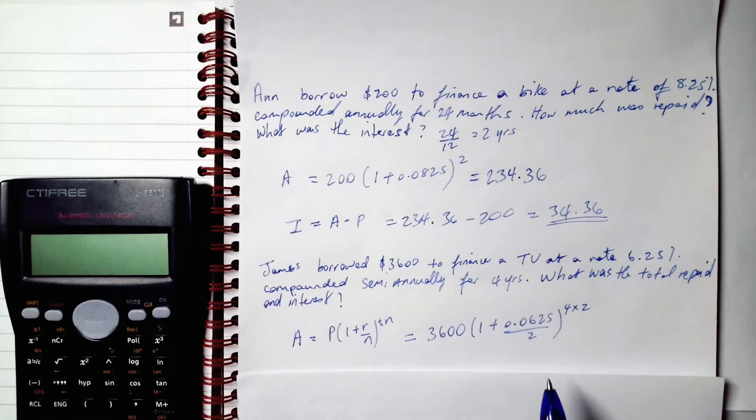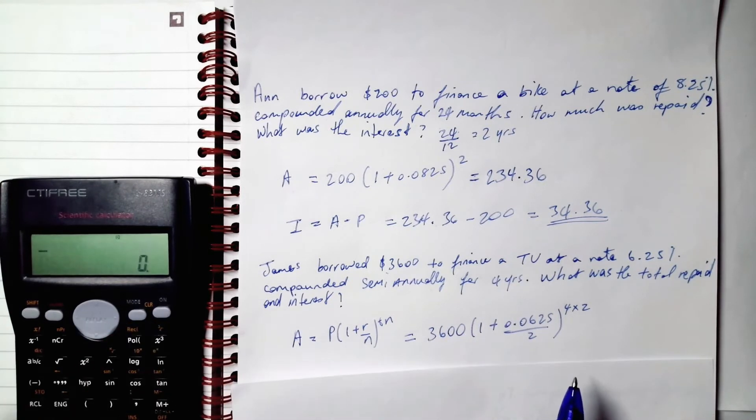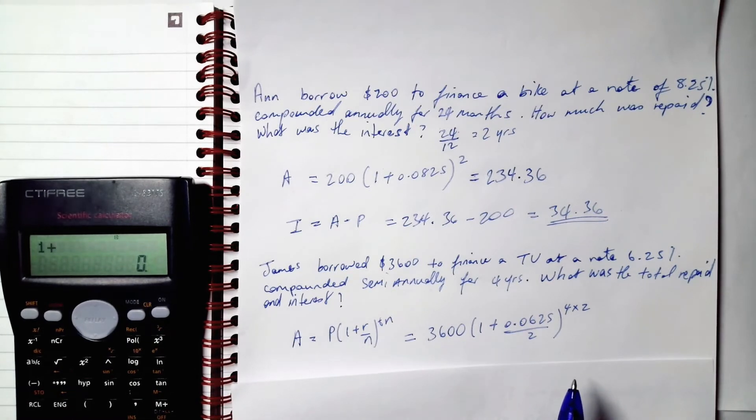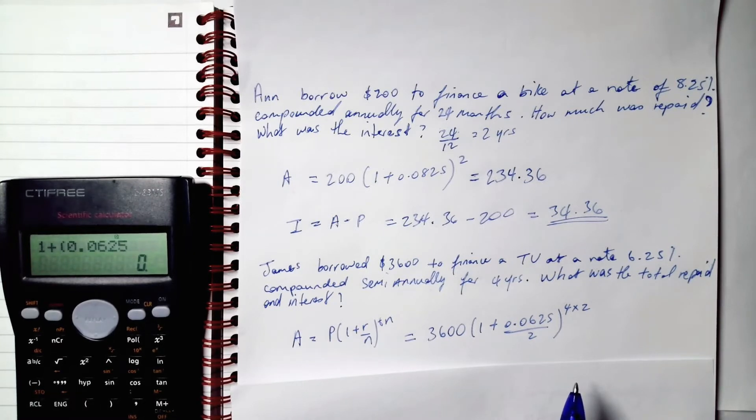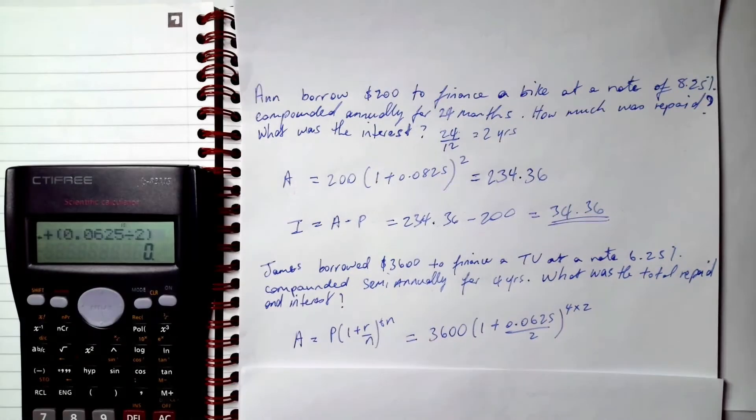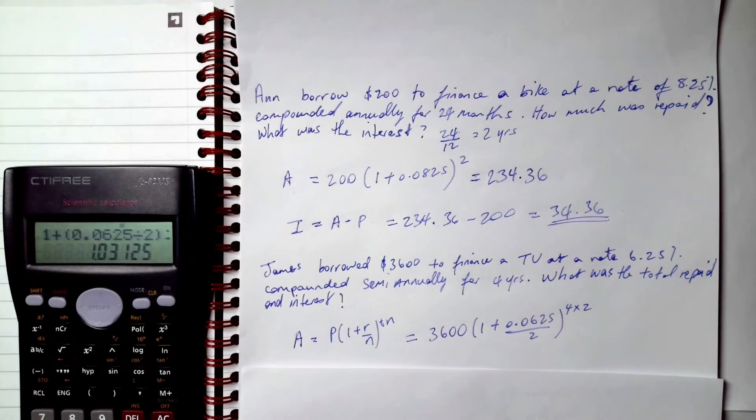All right, so we get our best friend of course and we start calculating. So 1 plus bracket 0.0625 divided by 2, close bracket, 1 plus bracket 0.0625 divided by 2. All right, and then we're going to raise this to the power of 8.